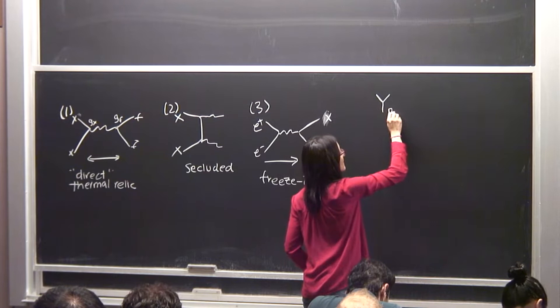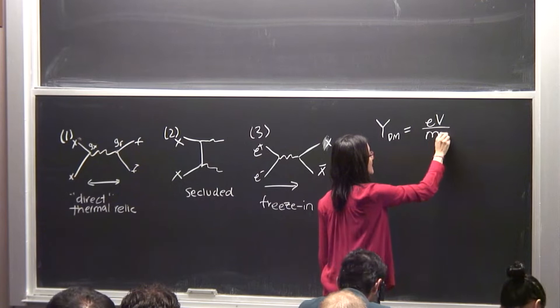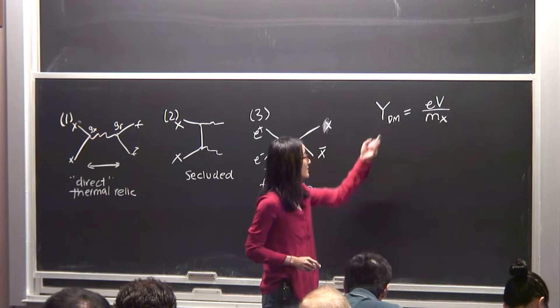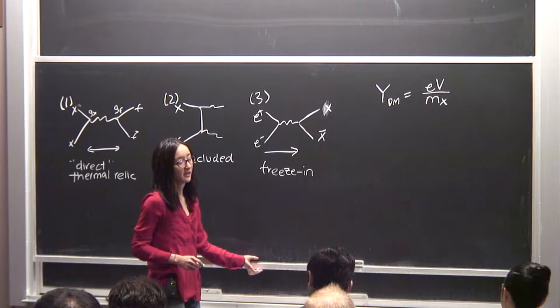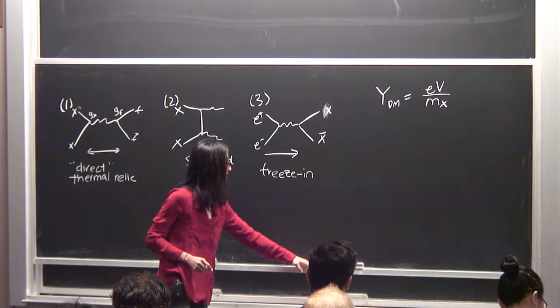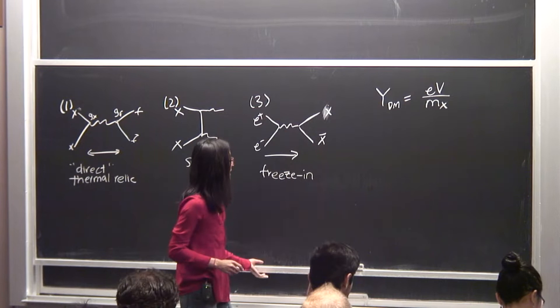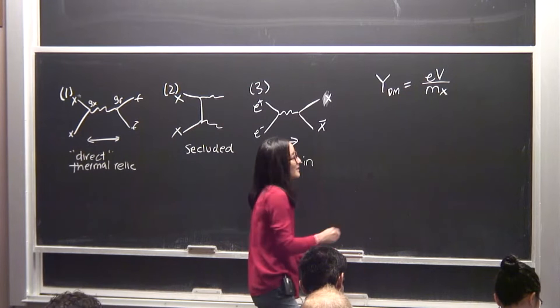What we did last time: we got the useful relation that if you want 100% of the dark matter relic abundance today, you compute whatever the freeze-out comoving number density is and set it equal to an eV over M_X. This does not apply for category three — but I'm about to apply it to category three. We did it for categories one and two, so let's do it quickly now for category three.